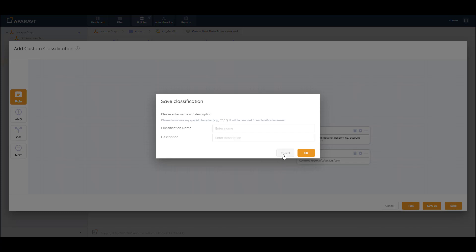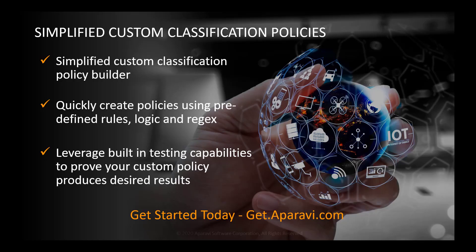I can save this as a custom classification and apply it to my entire data set. In this demonstration we covered how to create custom classification policies within the Operavi platform using the simplified custom classification policy builder. We showed how to create policies using predefined rules, built-in boolean logic, and regular expressions, and how to leverage built-in testing capabilities to prove your custom policy will produce the desired results before rolling out to production. For more information, visit git.operavi.com.